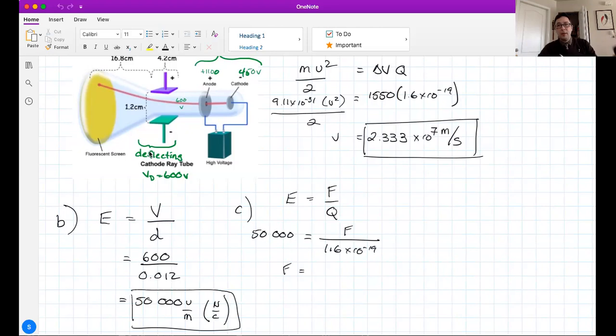Pull out the calculator again, run that calculation, and I get, unless I'm mistaken, 8 × 10⁻¹⁵ newtons. That's my force acting on the electrons between these two plates here.